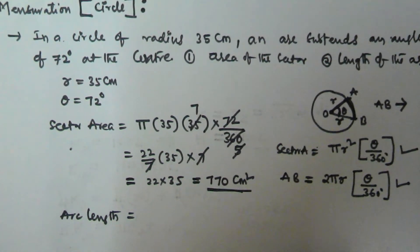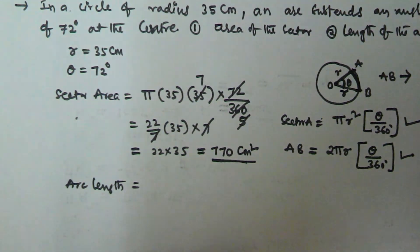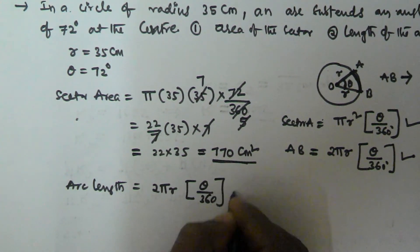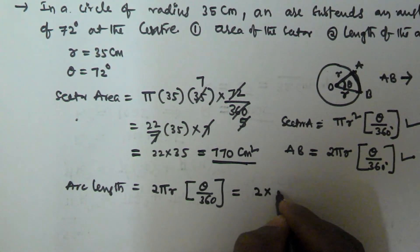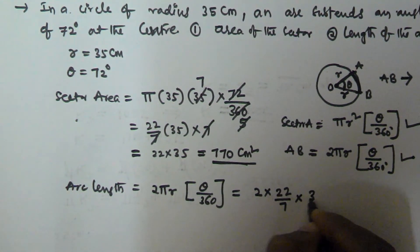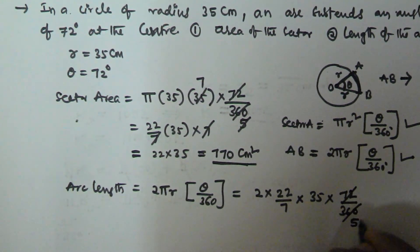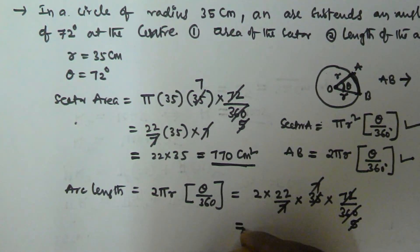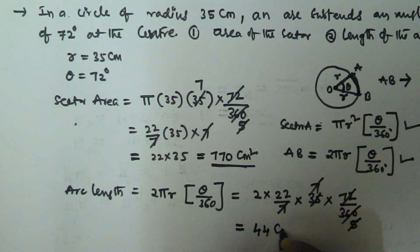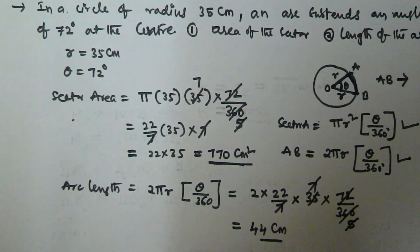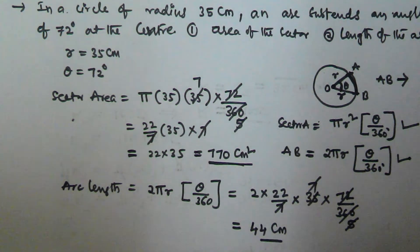The arc length is given by 2πr × θ/360. Substituting the values: 2 × 22/7 × 35 × 72/360. The 7 cancels with 35, and 72/360 simplifies. This gives 2 × 22 = 44. So the length of the arc making 72 degrees at the center with radius 35 centimeters is 44 centimeters. I hope you got this — thank you very much for watching and please subscribe to my channel.